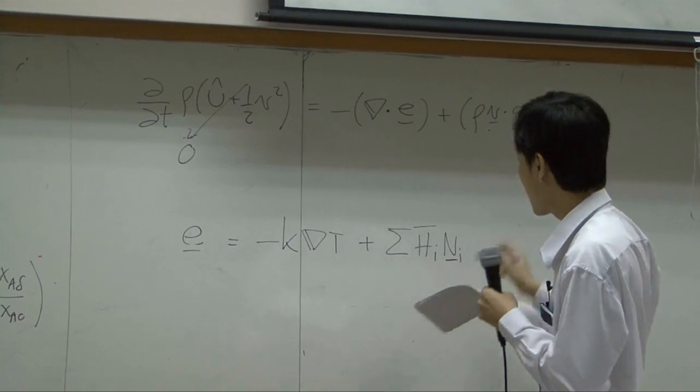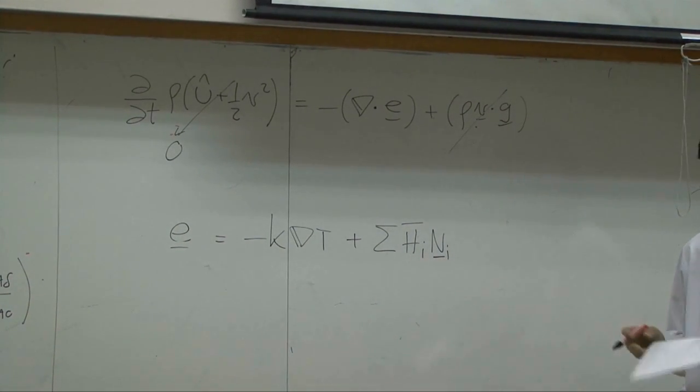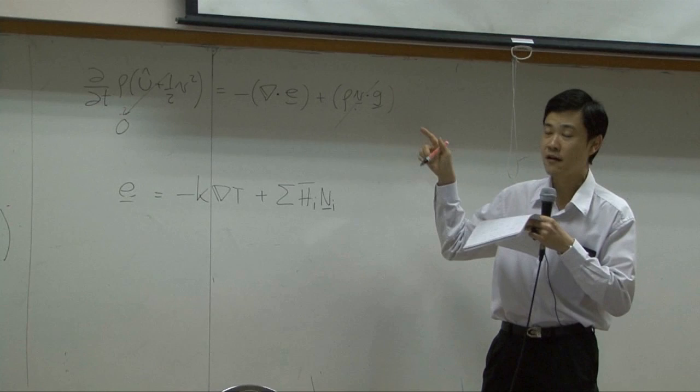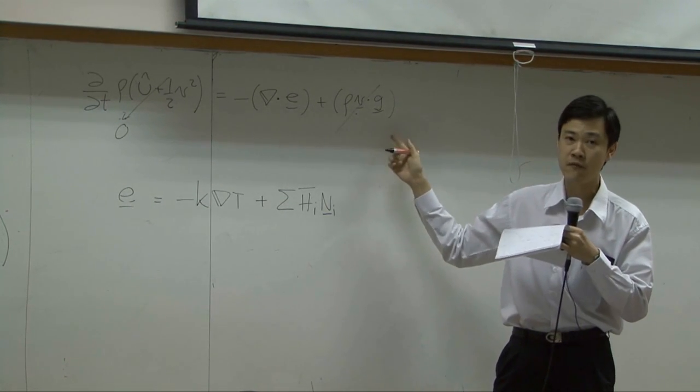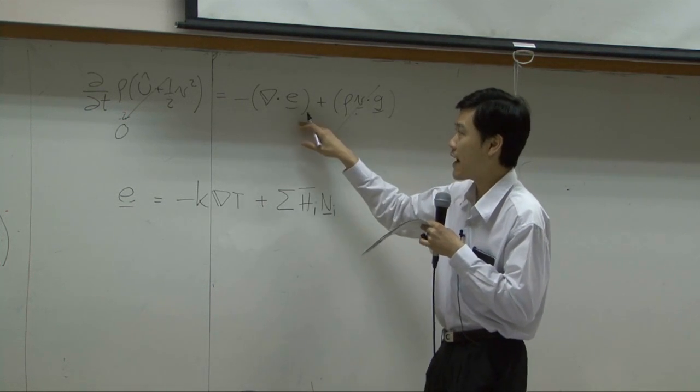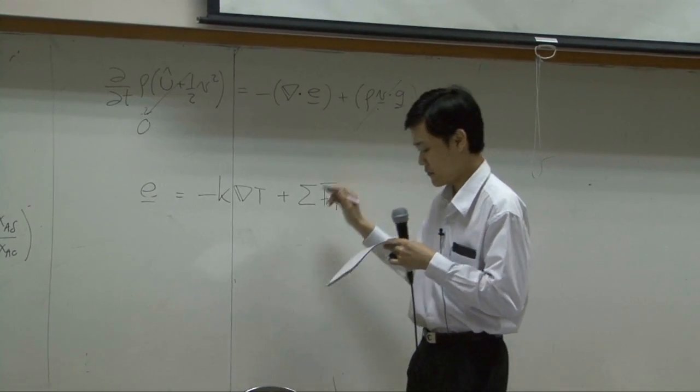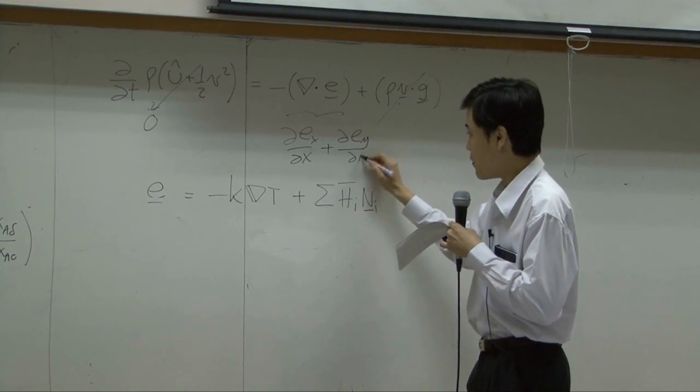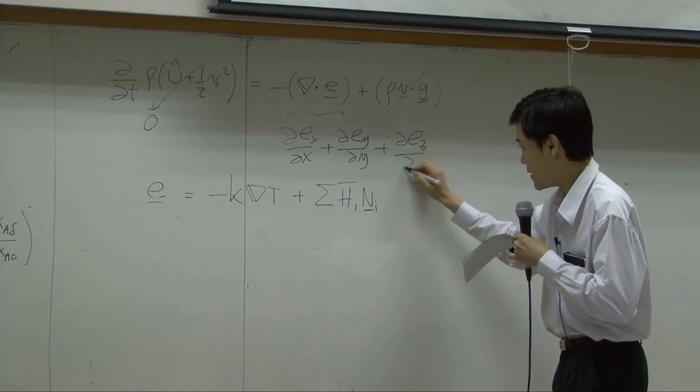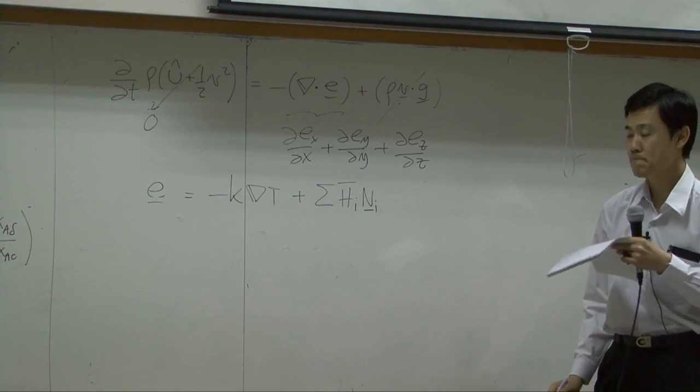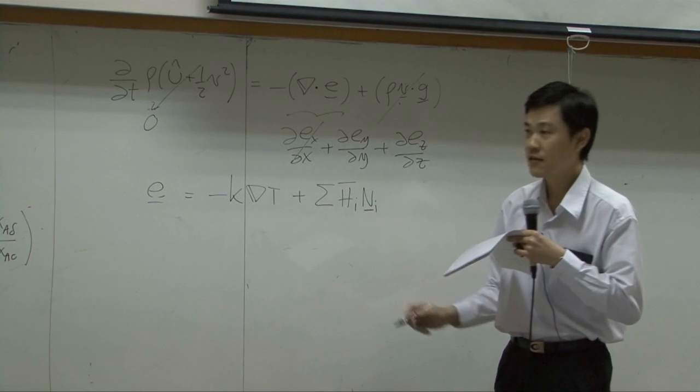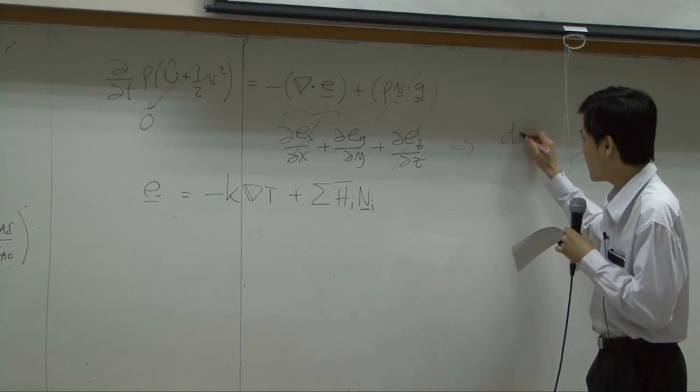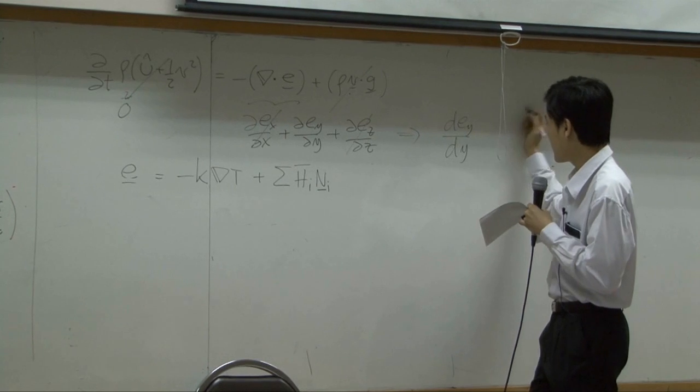And then this term is neglected because we just neglect all force applied to our fluid because our fluid is just vapor, and then gravity force upon vapor is negligible. So what we have would be del dot e which is del ex by dx, del ey by dy and del ez by dz. We do not concern x or z direction. So therefore, what you have here would be del e by dy equal to zero.